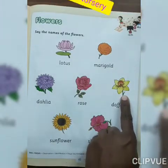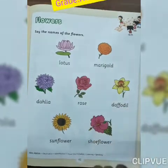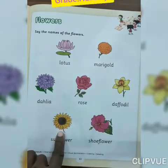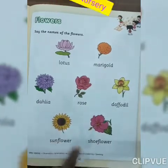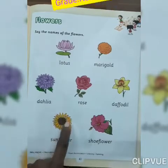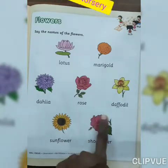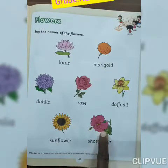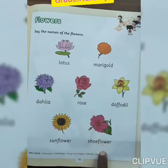Now look at here everyone. Which flower is this? Sunflower. And which color of sunflower? Yellow. Now look at here everyone. Which flower is this? Shoe flower. And which color of shoe flower? Pink, red, and white.